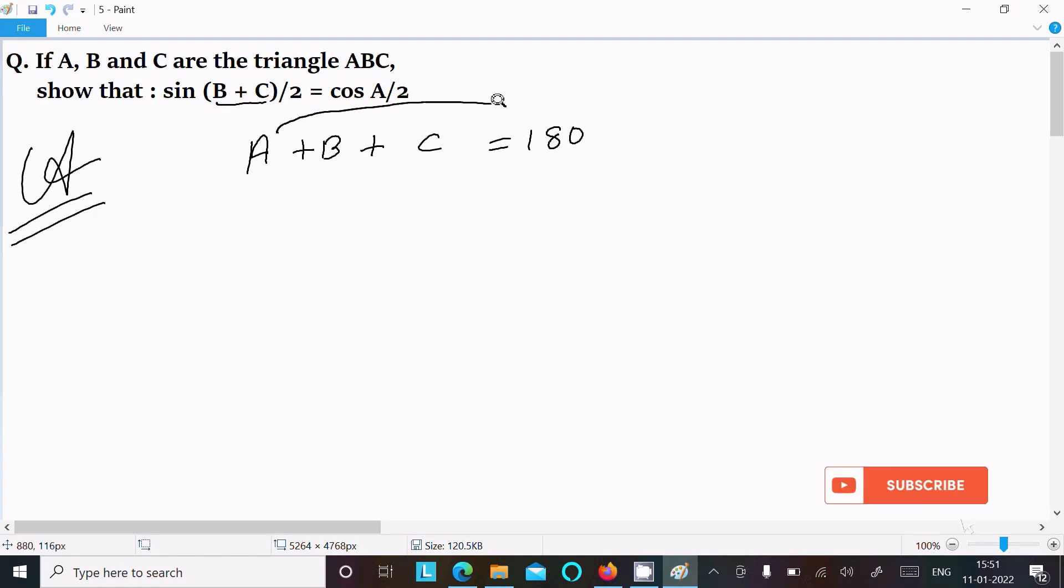Here I am moving A to the right, so we can write B + C = 180 - A. Thereafter, dividing by 2, so here I am going to divide by 2.